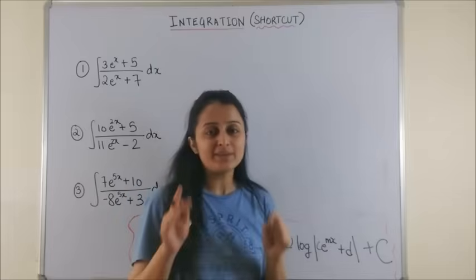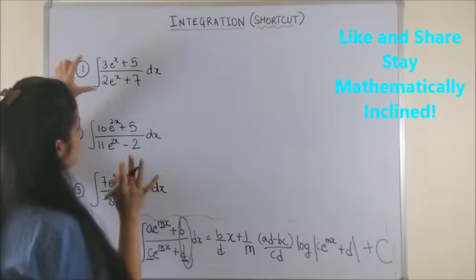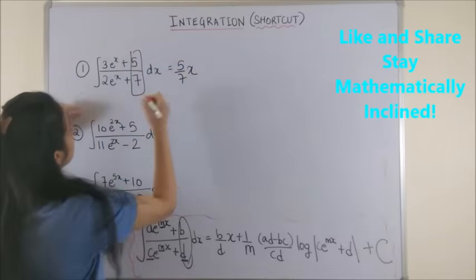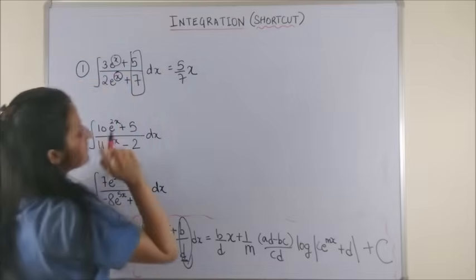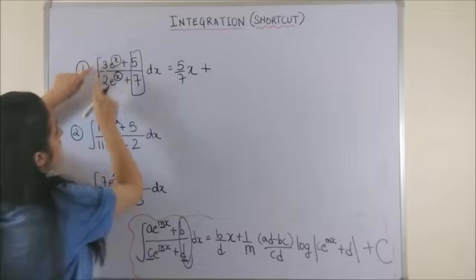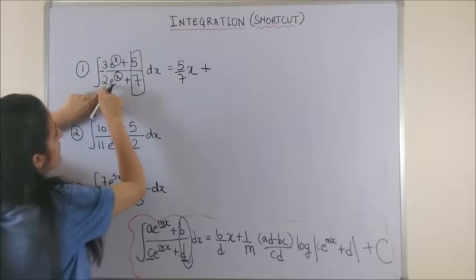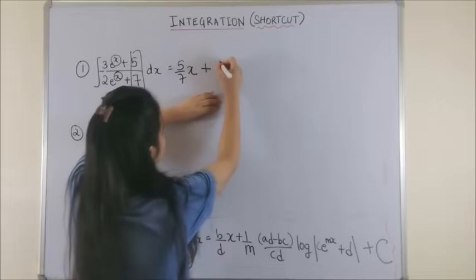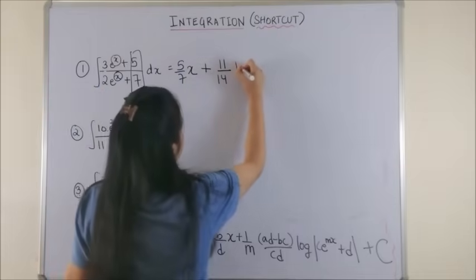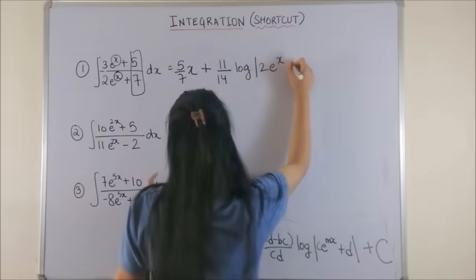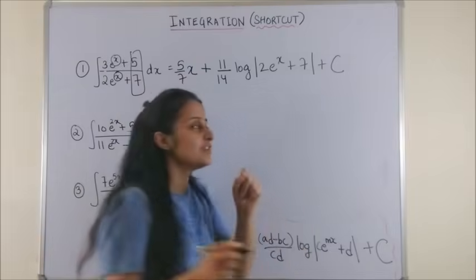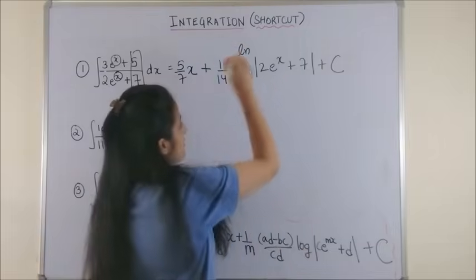So now one more time to run you through. Look at the first question. The moment you identify the form I take 5 by 7 and attach an x with it plus since this x has the power 1 only so it stays as it is plus I mentally multiply. So this is 3 into 7, 21 minus 2 into 5 that's 10. So 21 minus 10 is 11 into the product of these two which is 14 and then log mod 2e to the power x plus 7 plus c. Please note this log is the natural log. So instead of writing this you may also write ln.